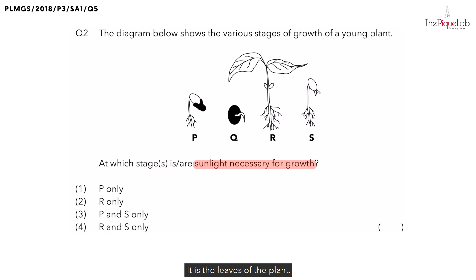It is the leaves of the plant. And remember, when the leaves of the plant are able to trap sunlight, what process are they able to carry out? The leaves of the plant will be able to carry out photosynthesis and that is the process used to make food. And is food needed for the plant to grow? Definitely.